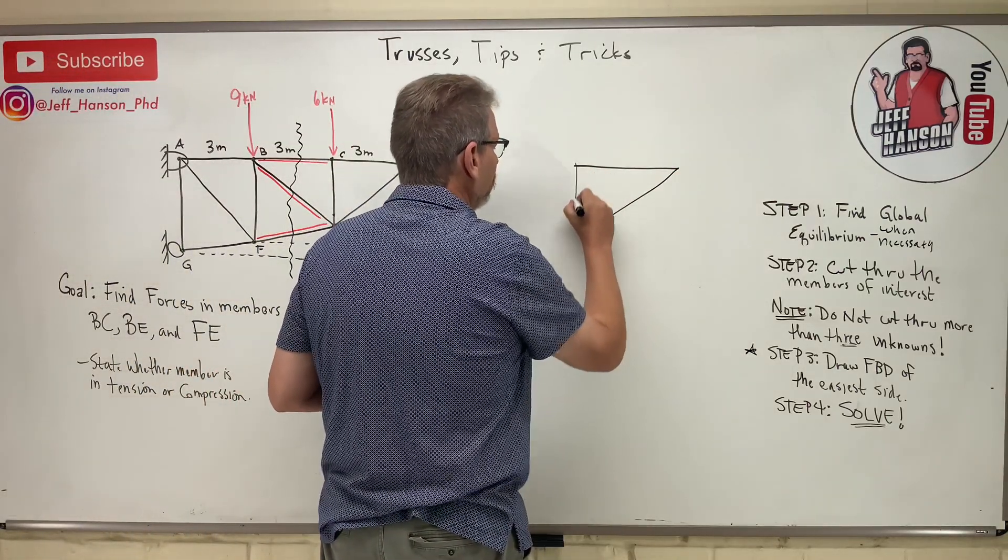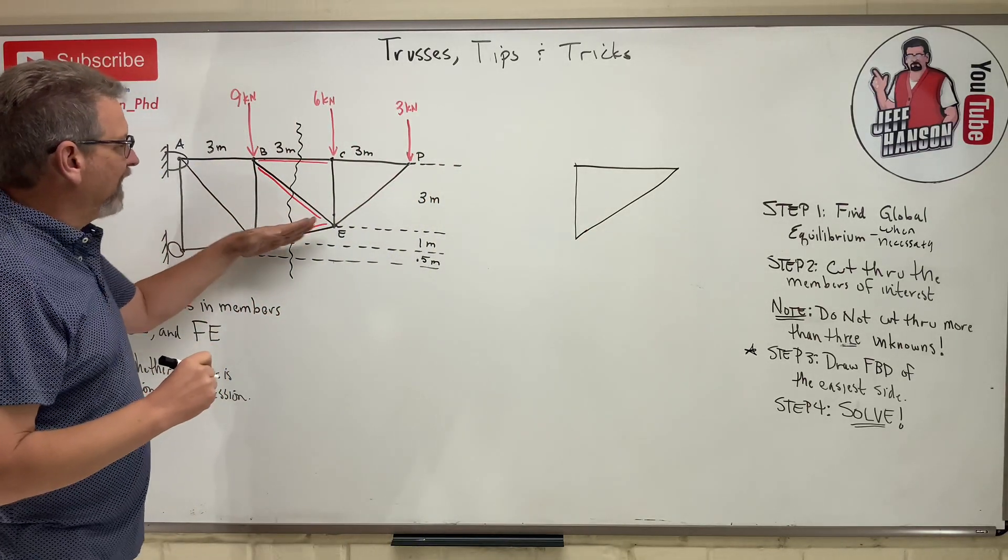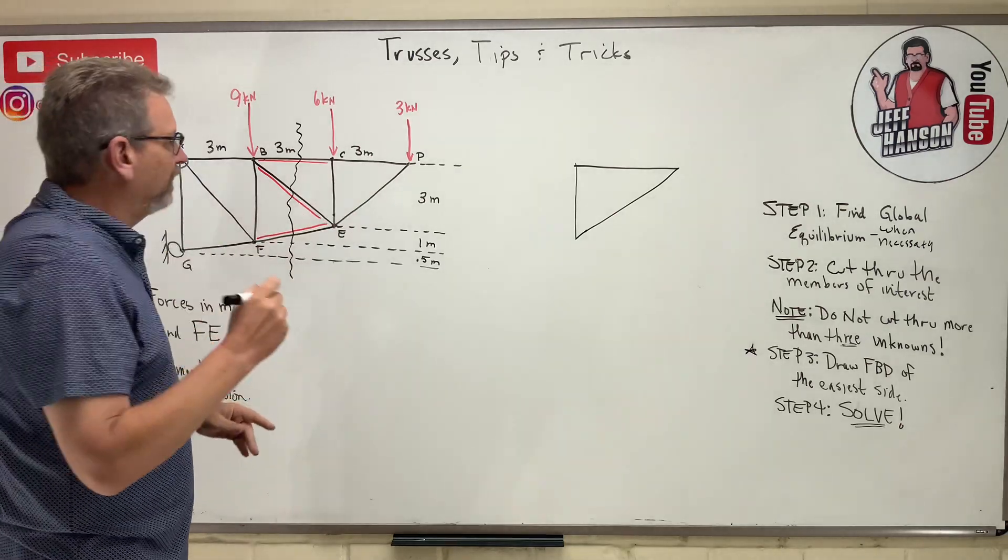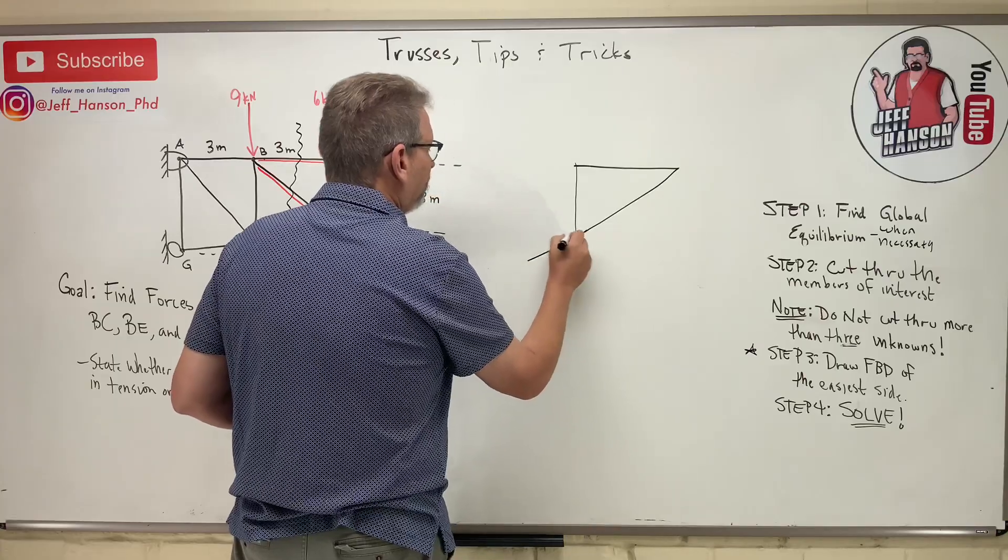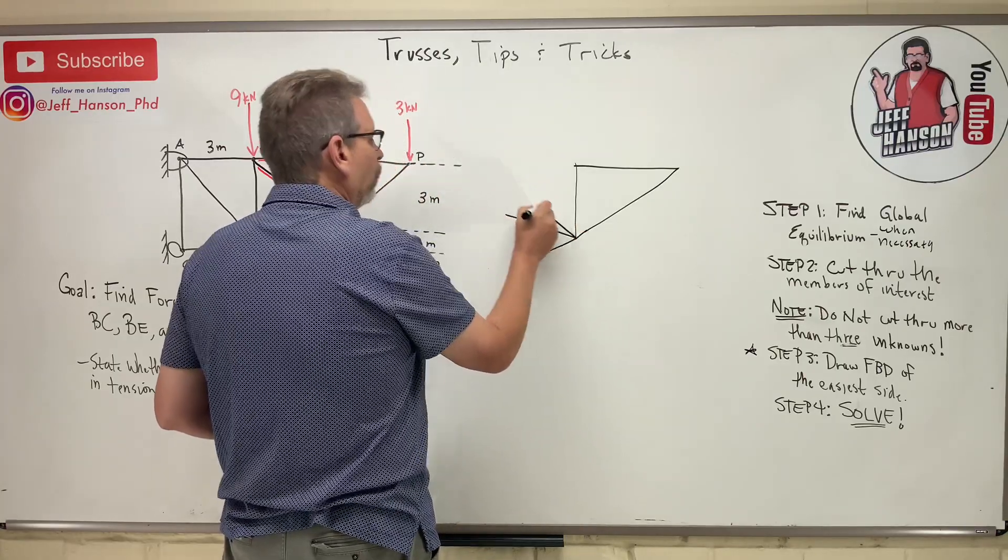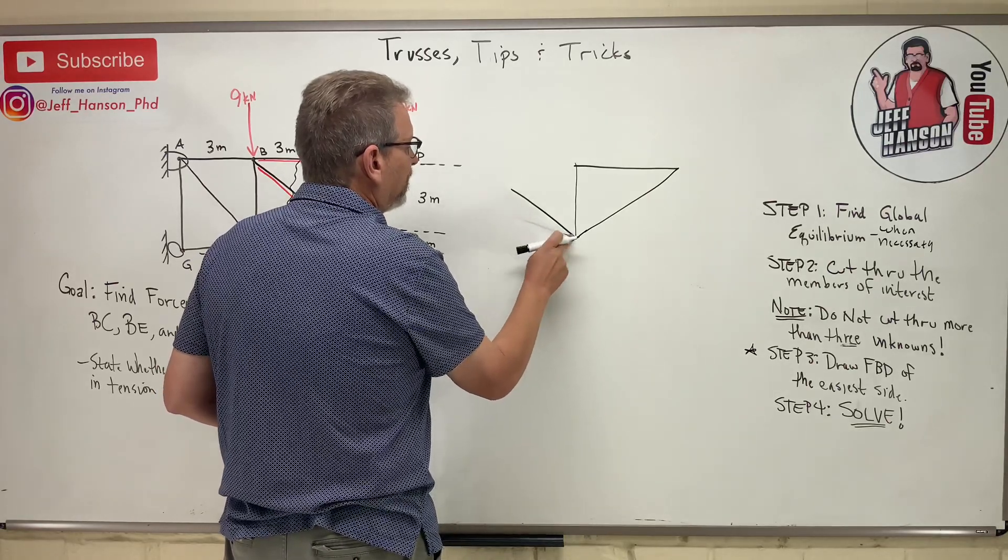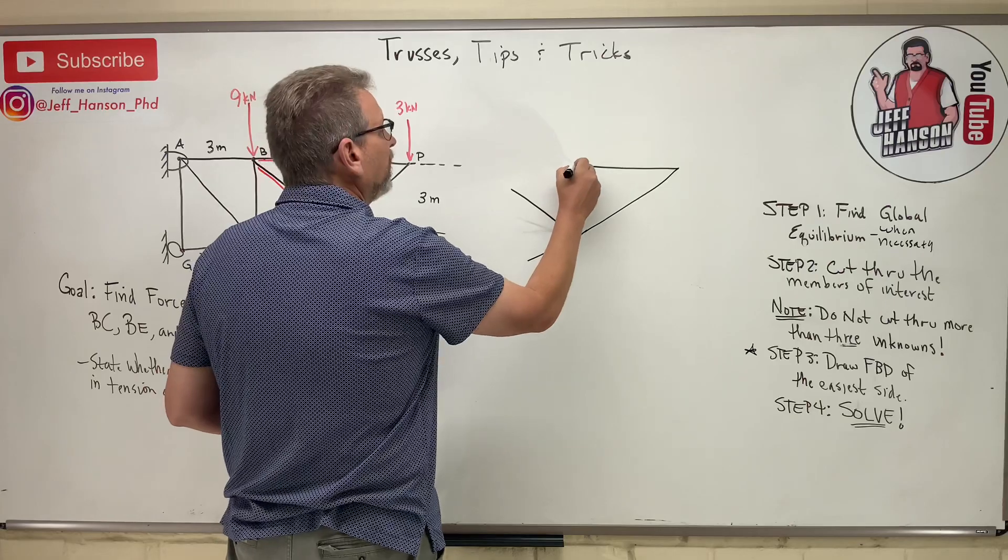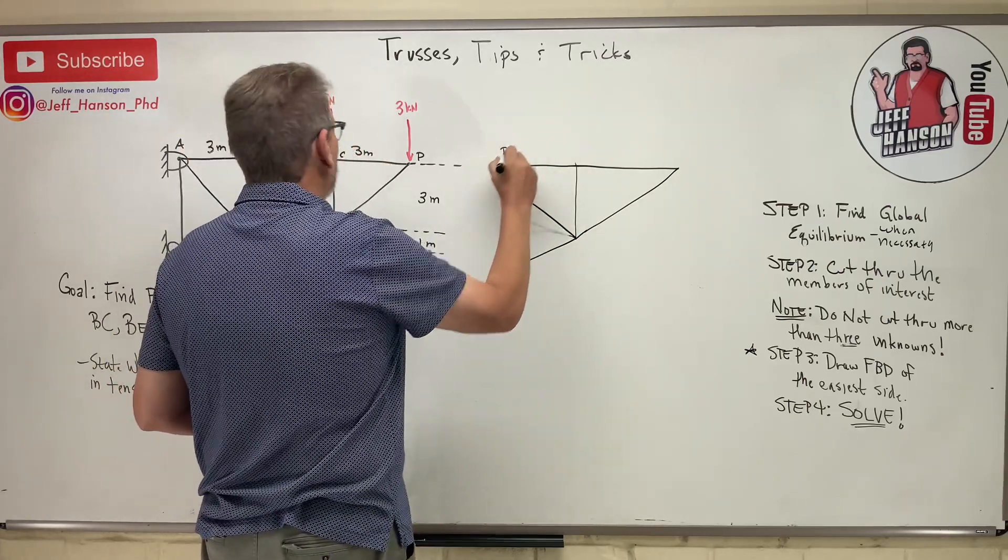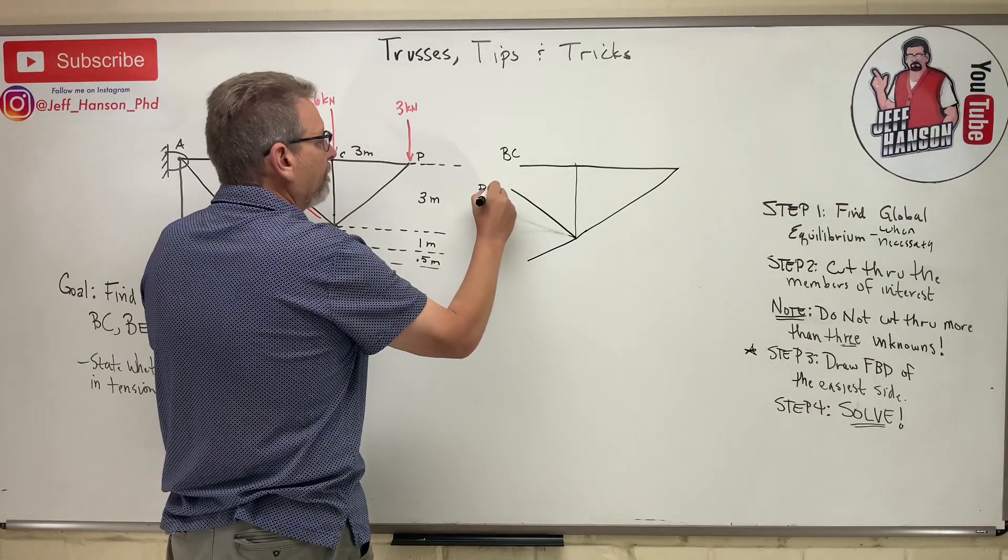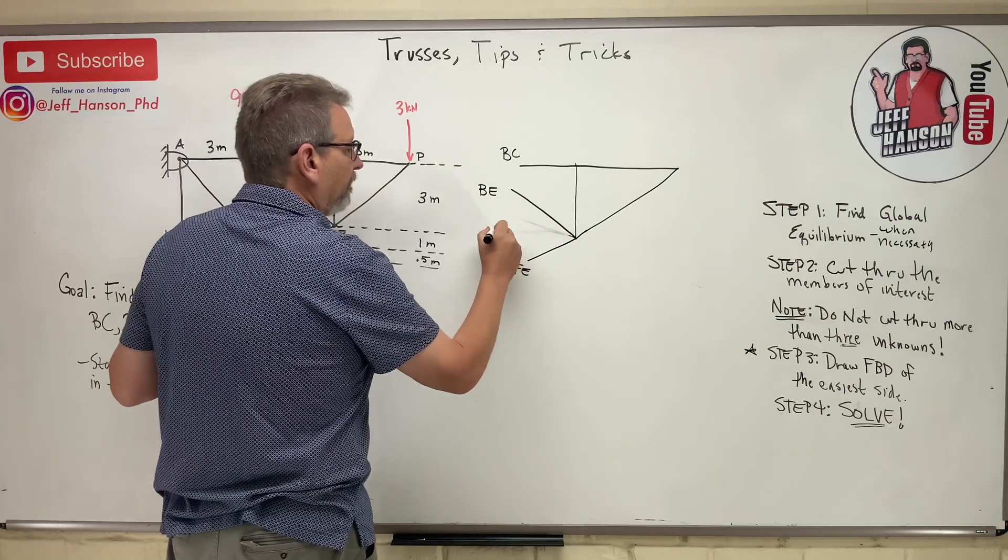Big triangle. Nice free bodies. Big, nice free bodies. This is a different angle than that. So we've got a little anglism we have to contend with. So we've got a vector, a vector. I should draw that more steeply. And then one here. So this is BC. This one here is BE. And this one down here is FE.